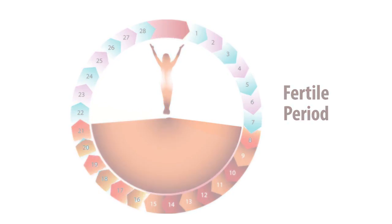If calculations are not possible, it is advisable that you avoid intercourse from the 8th to the 22nd day, counting the first day of bleeding as day 1.